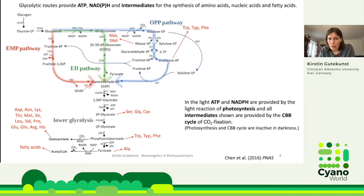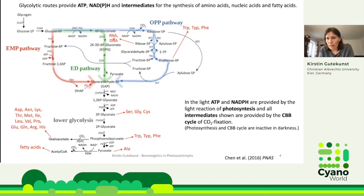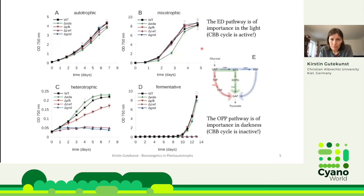Under dark conditions, these pathways are there to break down carbohydrates and yield ATP and reduction equivalents, as well as intermediates for the synthesis of amino acids and ribosides for DNA and RNA. In darkness, photosynthesis and the Calvin-Benson cycle are not running. However, in the light, ATP and NADPH can be yielded from the light reaction of photosynthesis, and all these intermediates are actually provided by the Calvin-Benson cycle of CO2 fixation.